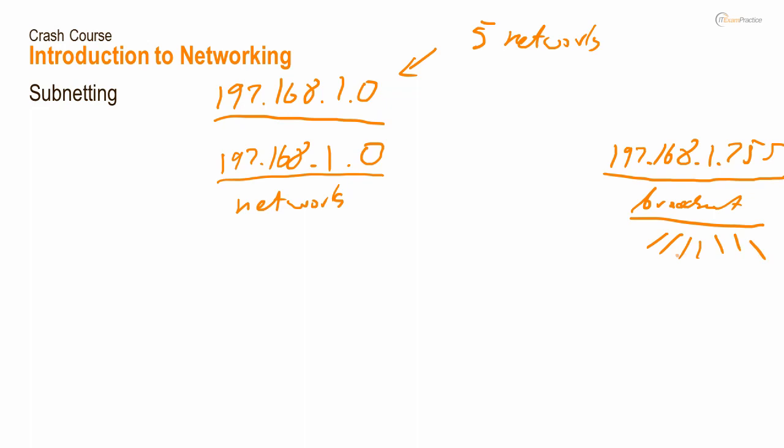Broadcast means send everywhere. If I don't know where, I'll send it everywhere. We are not allowed to use .0 and .255. That's why the first IP address is .1 and the last usable is .254. That's why we have 254 IP addresses.